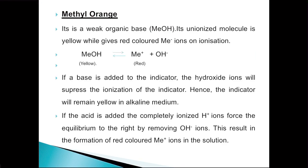Now we will see another example, that is methyl orange. Methyl orange is a weak organic base. It can be denoted as MeOH. Its unionized molecule is yellow, while it gives red color in ionized state because of the Me⁺ ions. In unionized form it shows yellow color and in ionized form it gives red color.